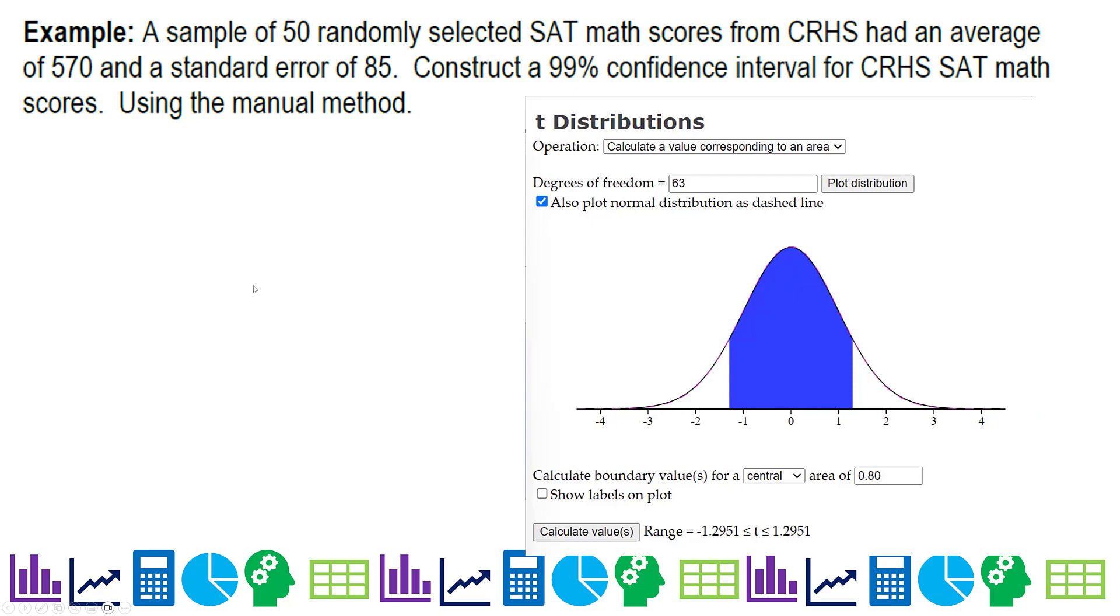So now we have a sample of 50 randomly selected SAT math scores from Cedar Ridge, and they had an average of 570 and a standard error of 85. We're going to construct a 99% confidence interval using the manual method. So the first thing we're going to do is write down what we know. We have 570, 85, 50. That's N is 50, our sample size. 85 is standard error. 570 is the average. And our degrees of freedom is one lower than the sample size.